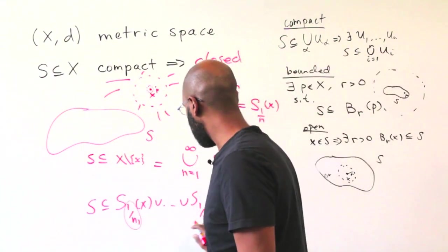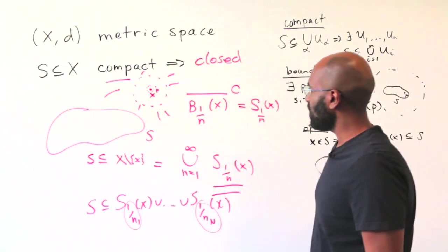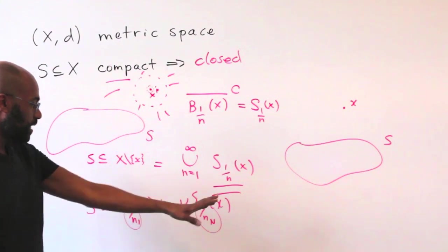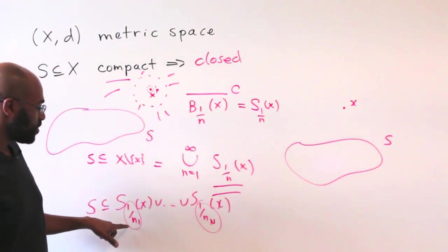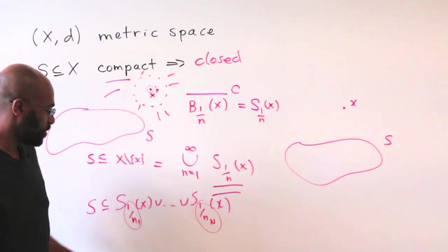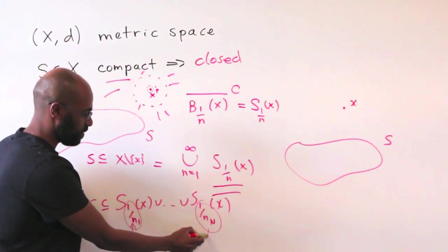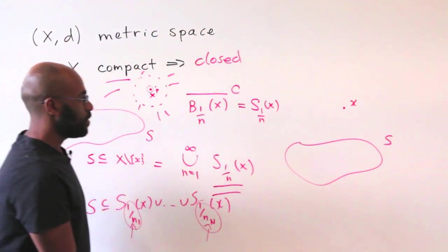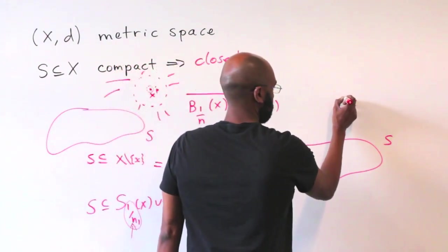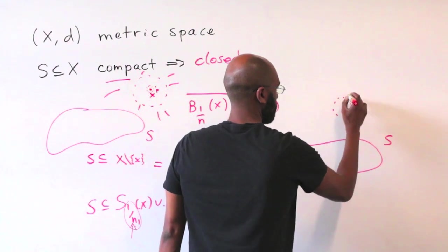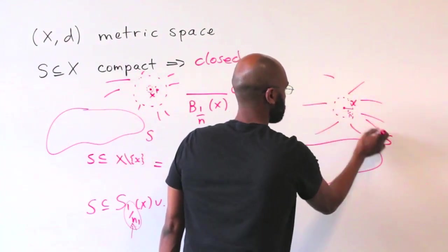So again, one of these radii is going to be smallest. So the picture we have here is we have our point X, our set S, and then let's just assume that these are ordered so that this is the smallest of the reciprocals and this is the largest. So we have this 1 over N1 here and everything outside of it.